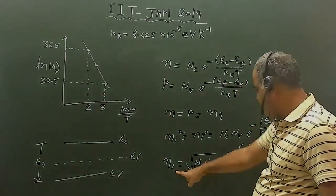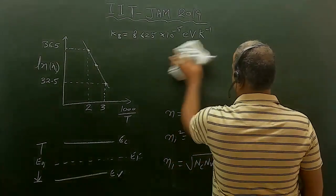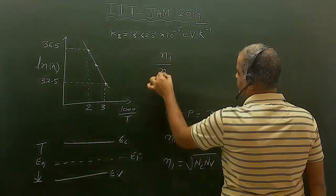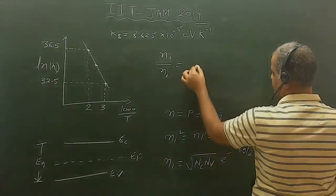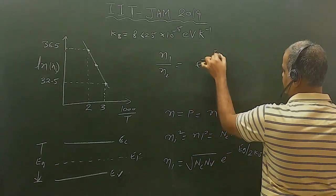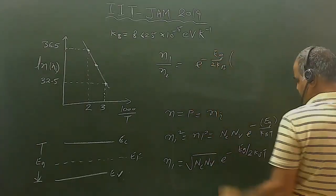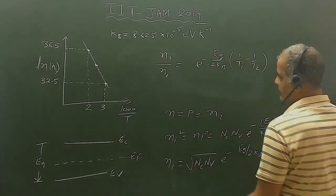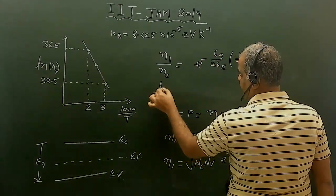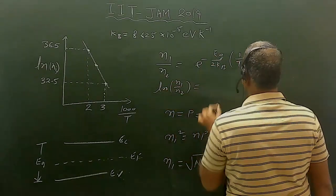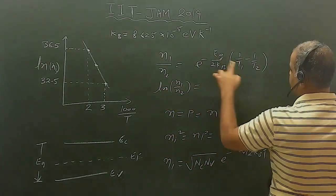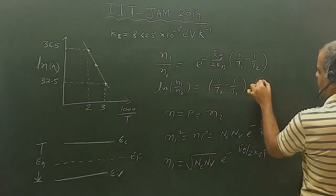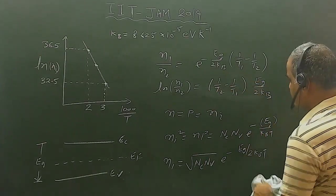This is the intrinsic carrier concentration at temperature T. If the intrinsic carrier concentration at T1 is n1 and at T2 is n2, we can write n1/n2 = exp(-(Eg / 2kB) · (1/T1 - 1/T2)). Taking the log of this expression gives: ln(n1/n2) = (Eg / 2kB) · (1/T2 - 1/T1).